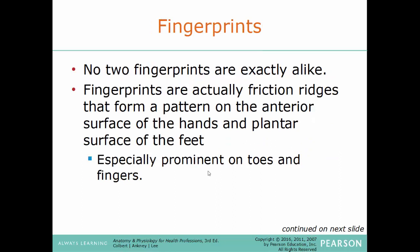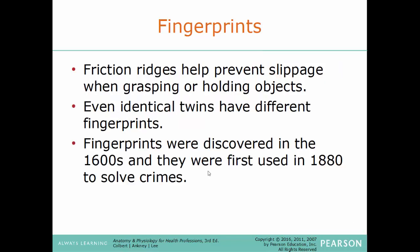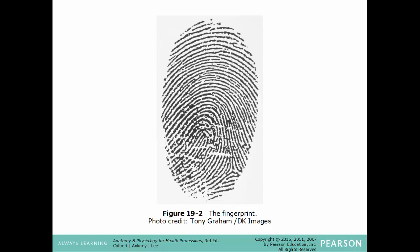Fingerprints: no two fingerprints are exactly alike, even for identical twins — they will be slightly different. Fingerprints are friction ridges that form a pattern on the anterior surface of the hands and on the plantar surfaces of the feet, especially prominent on the toes and fingers. The fingerprints are made while we're inside the womb, developing in response to the pull of elastic fibers on the dermal papillaries. These friction ridges help prevent slippage when grasping or holding objects. Fingerprints were discovered in the 1600s and were first used in 1880 to solve crimes.